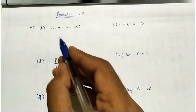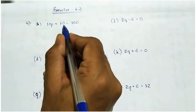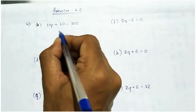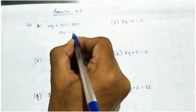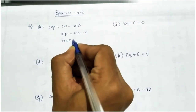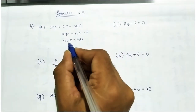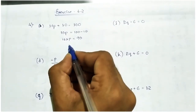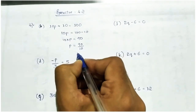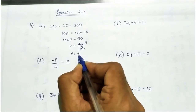In fourth main, taking b: 10p plus 10 equal to 100. Take 10 to the right side — it becomes minus — so 10p equal to 100 minus 10 which is 90. Take 10 to the right side, it becomes divisible: 90 by 10. 10 ones are 10, 10 nines are 90, so p equal to 9.